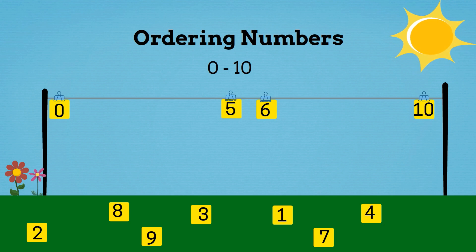Now what number is 1 less than 10? It's 9. 9 is 1 less than 10. So we'll put 9 before 10.